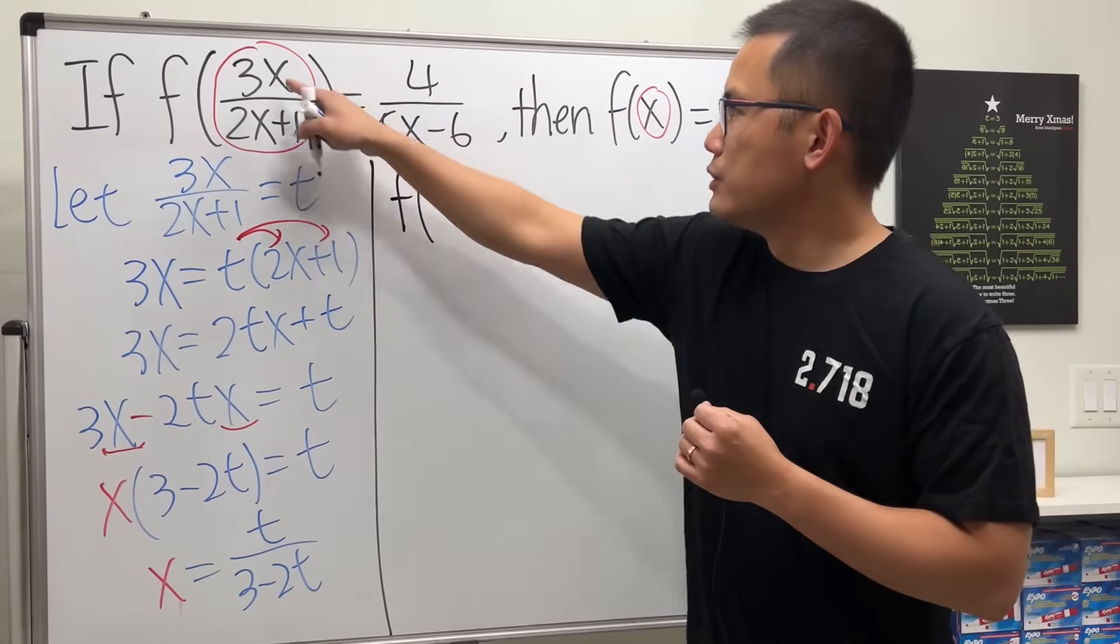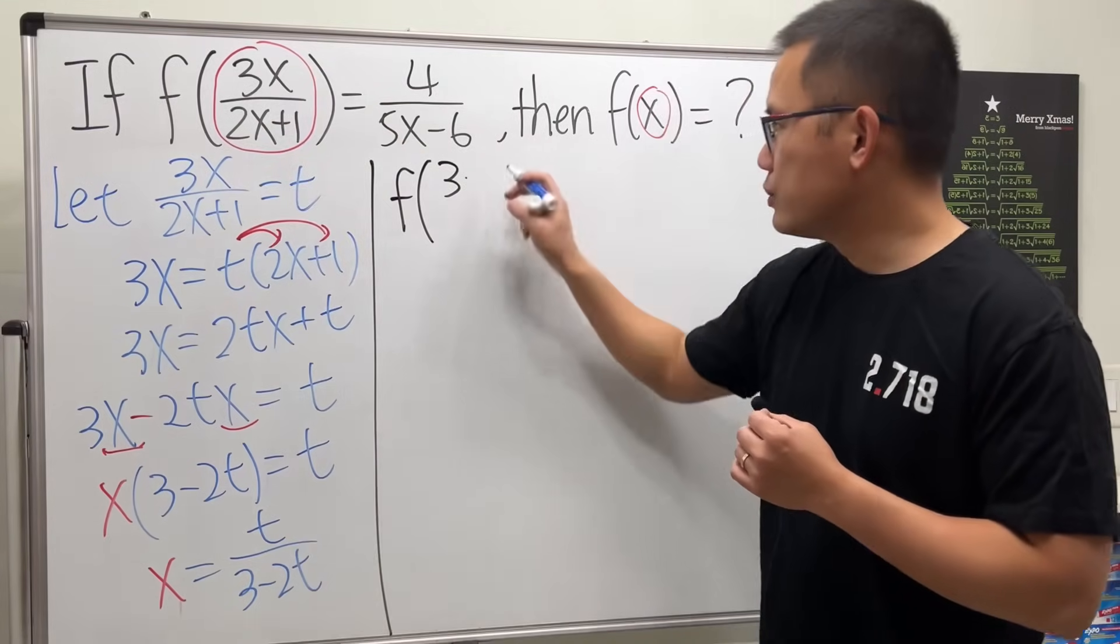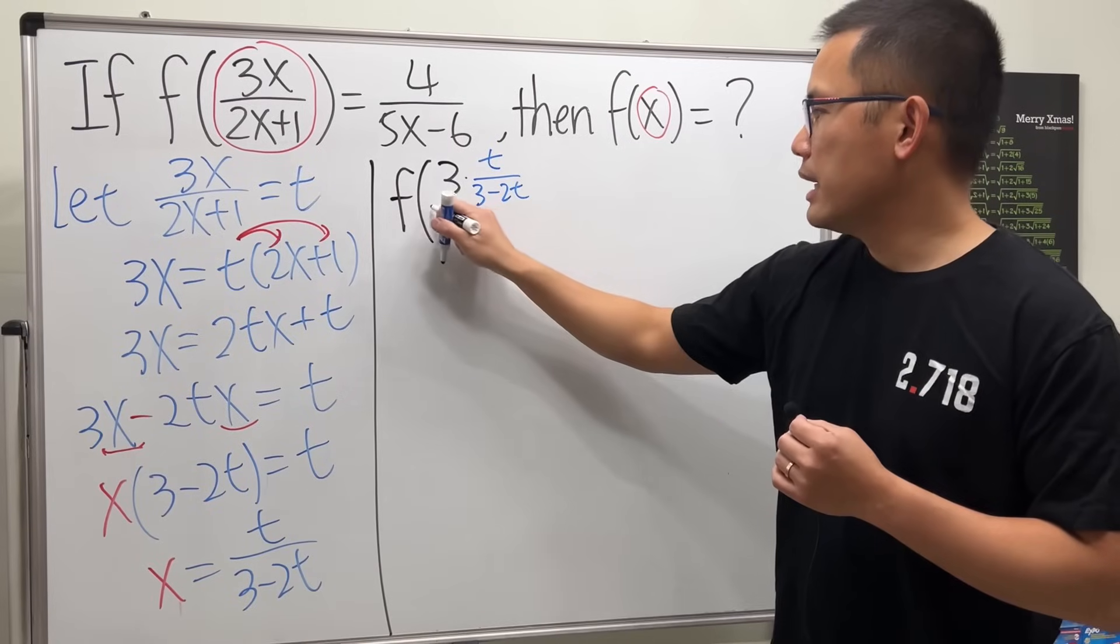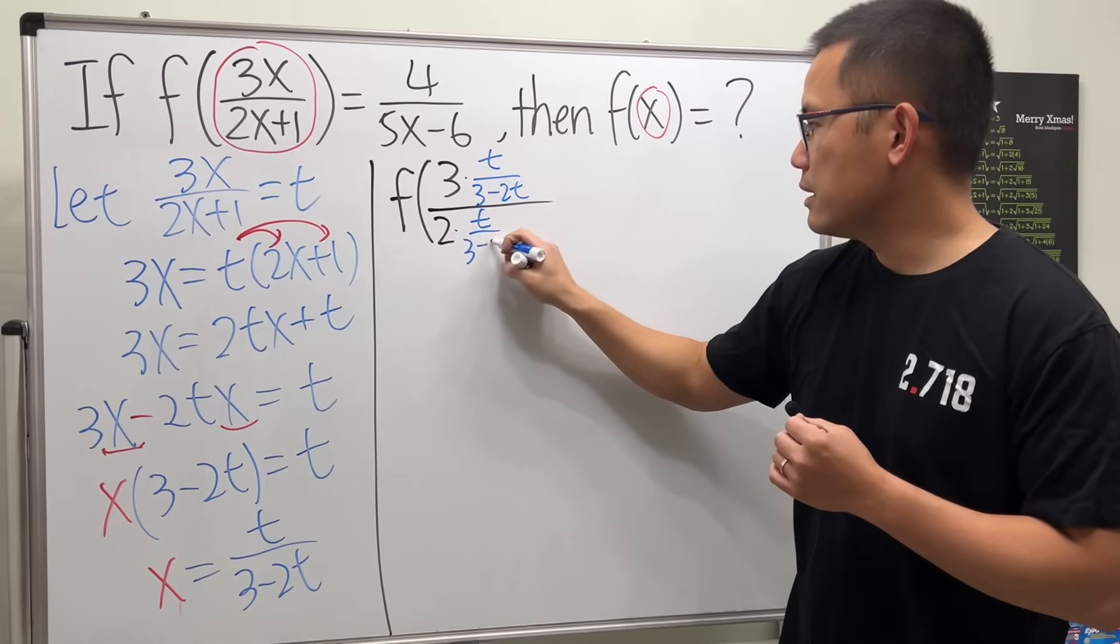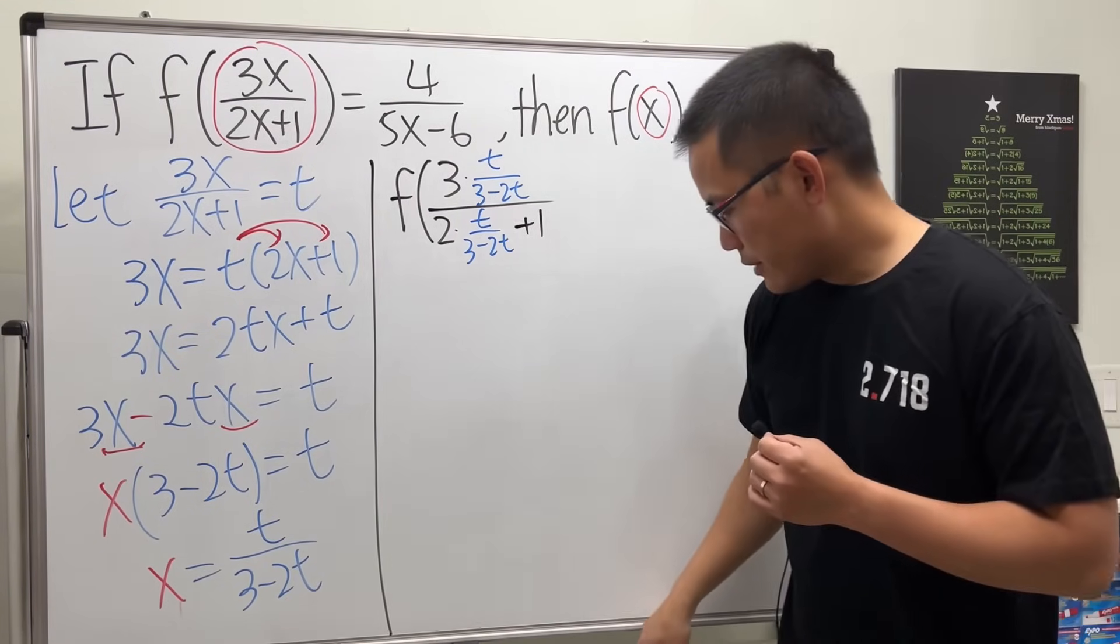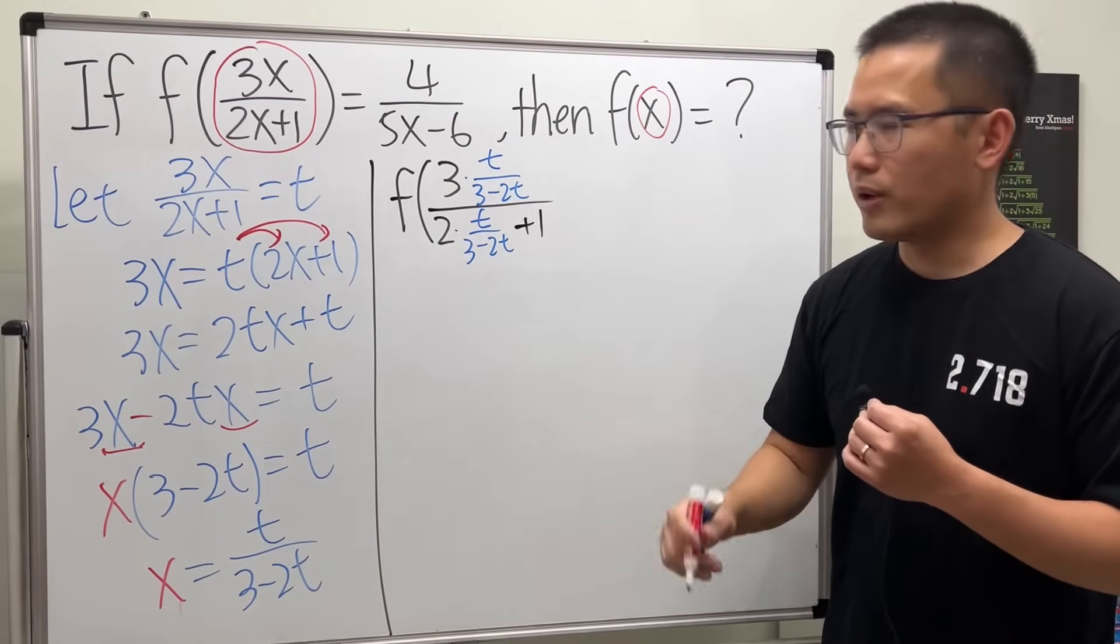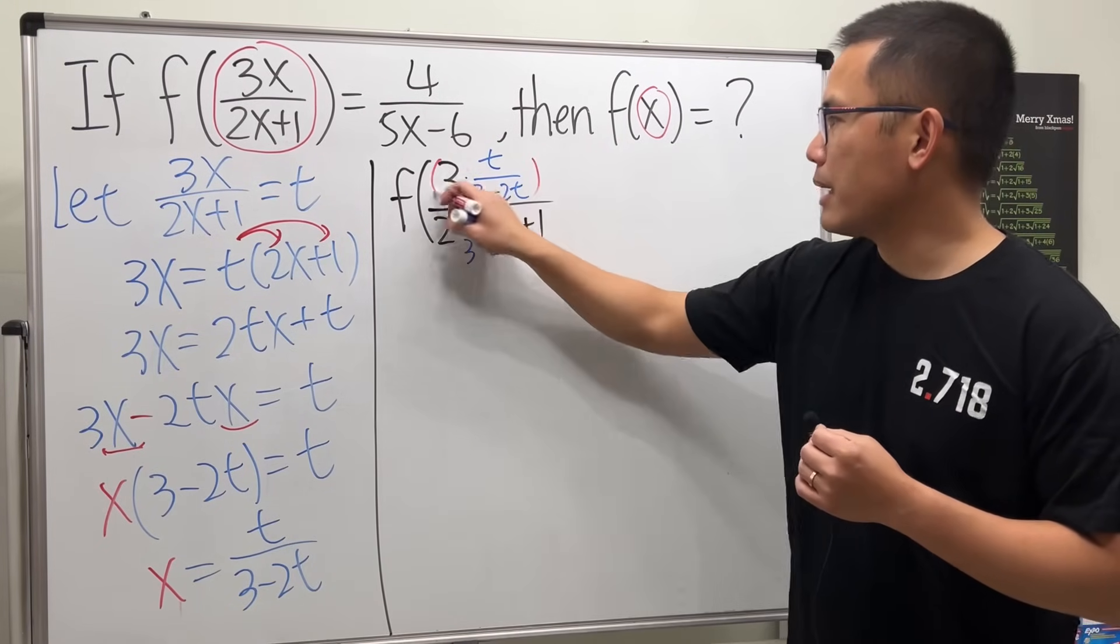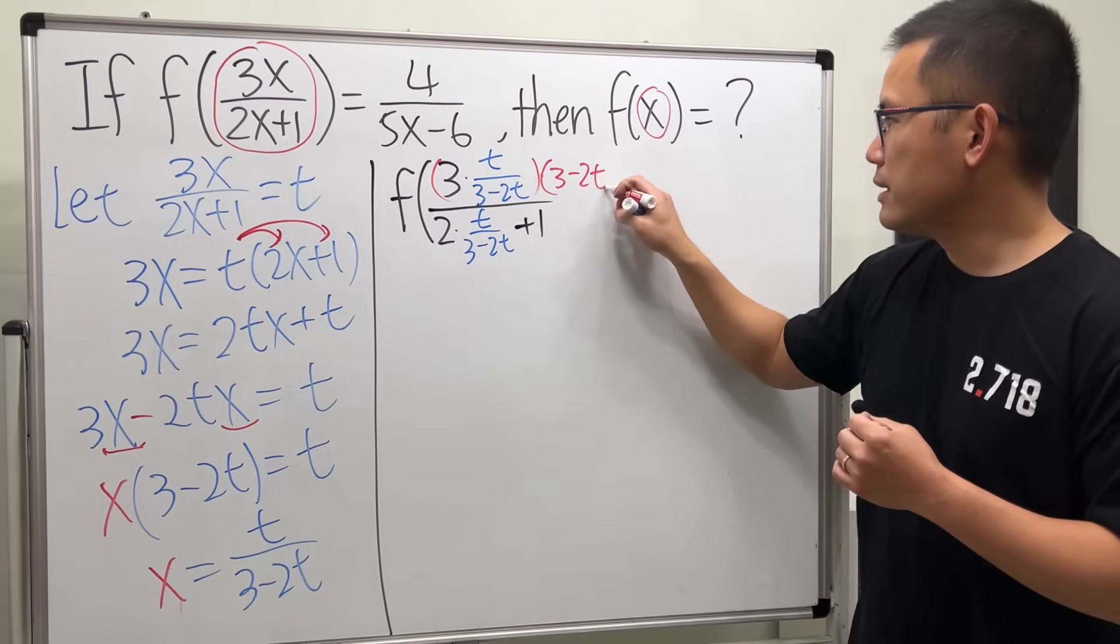Let me show you. F of 3 times, if you put the x as that, which is t over 3 minus 2t, over 2 times the x, which is this again, plus 1. We will have to fix this complex fraction, so we have this denominator. We just have to multiply the top and bottom by this denominator, which is 3 minus 2t.